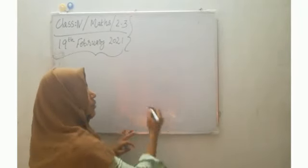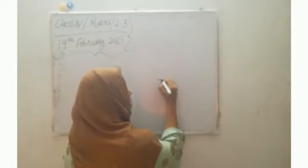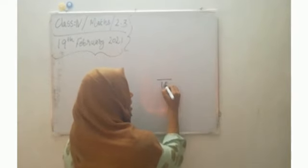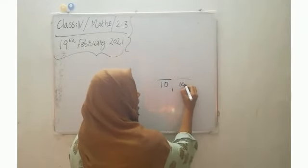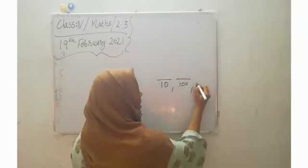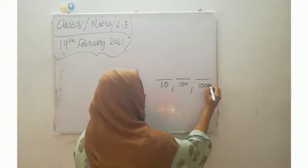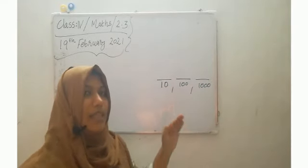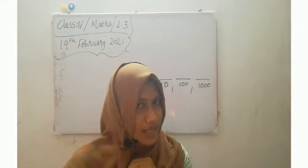You know, decimals are the fractions with denominators ten, hundred and thousand. Denominators with ten, hundred and thousand.